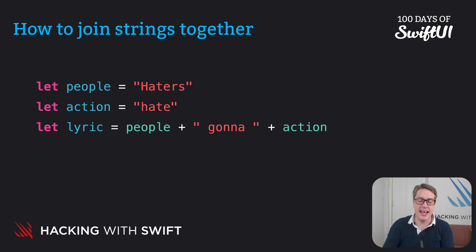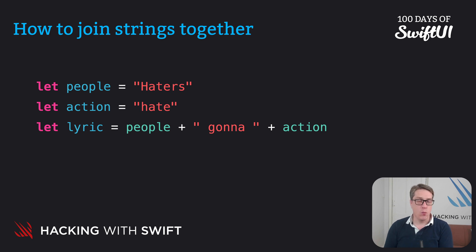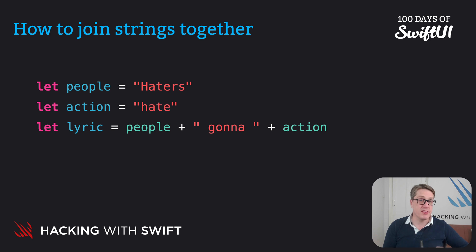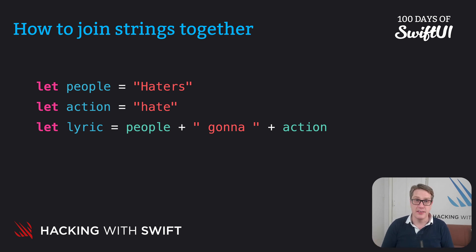Notice how we're using plus here to join strings together, but previously we used it to add integers and doubles. What's happened? The answer is what you're seeing is called operator overloading — the ability for one operator, like plus, to do different things depending on how it's used. So for strings, string plus string means concatenation, joining together, whereas integer plus integer means addition. This also applies to the compound assignment operator plus-equals, to add a string to an existing string variable.